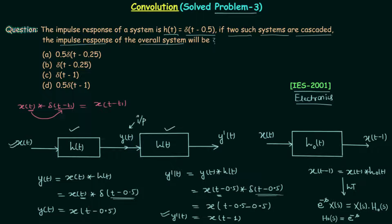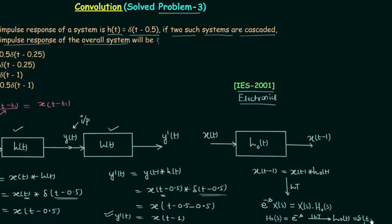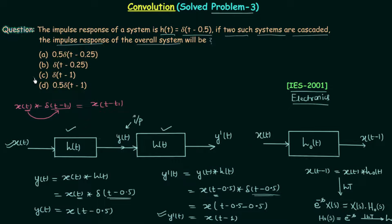We take the inverse Laplace transform to go back to the time domain. The inverse Laplace transform of H₀(s) gives us the impulse response h₀(t), and the inverse Laplace transform of e^{-s} is δ(t - 1). So the overall impulse response of the system is δ(t - 1). Checking the options, option C matches — δ(t - 1) is our answer.